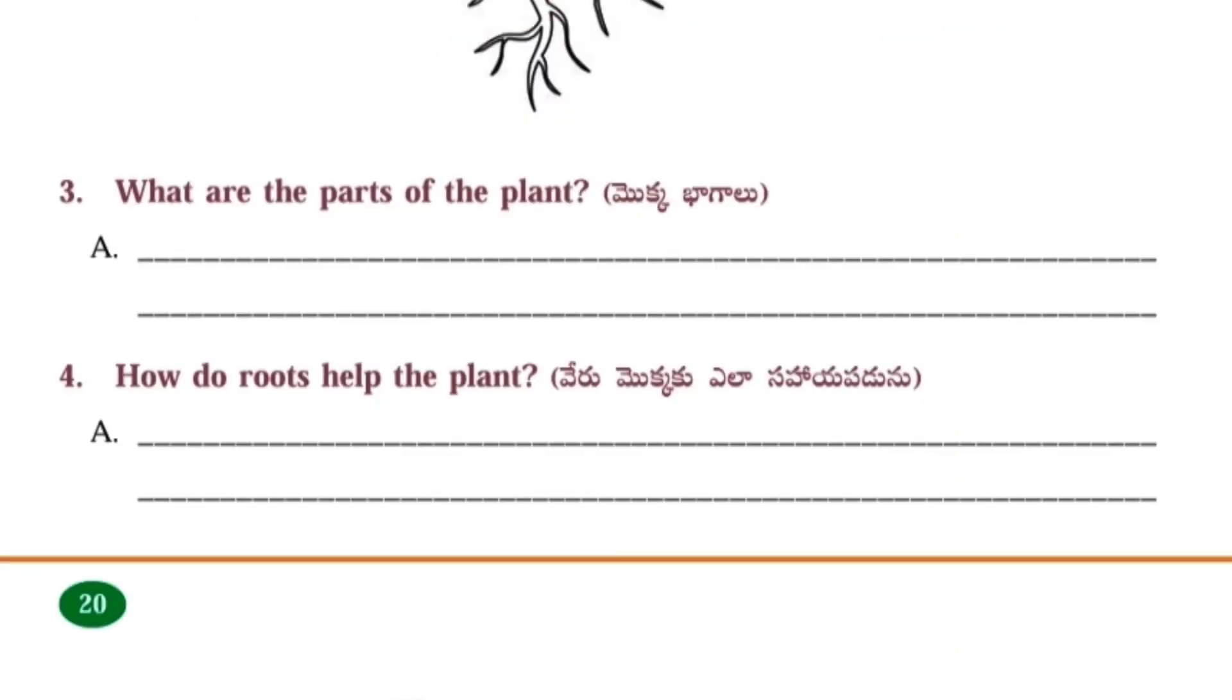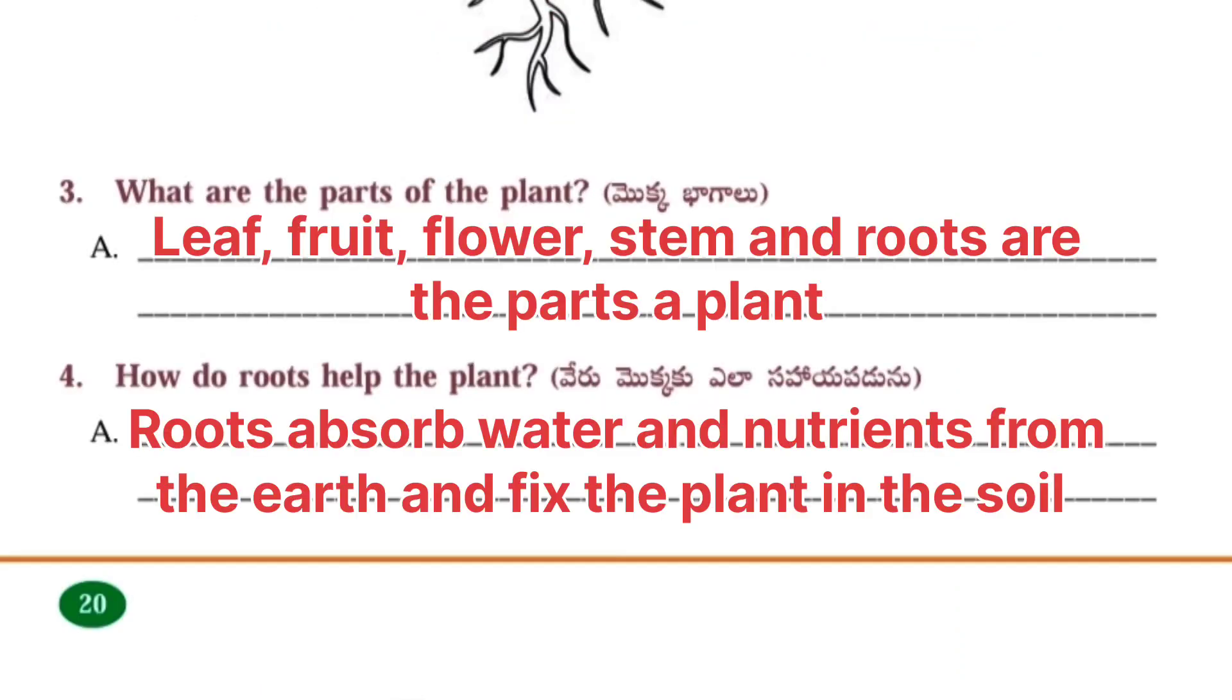Third one: What are the parts of the plant? Leaf, fruit, flower, stem and roots are the parts of a plant. How do roots help the plant? Roots absorb water and nutrients from the earth and fix the plant in the soil.